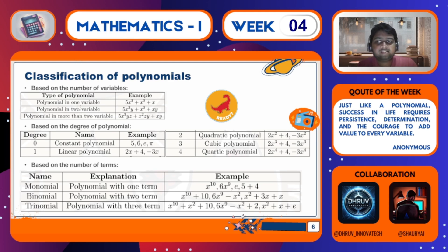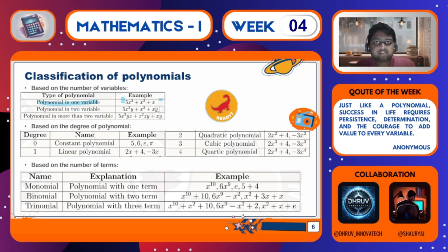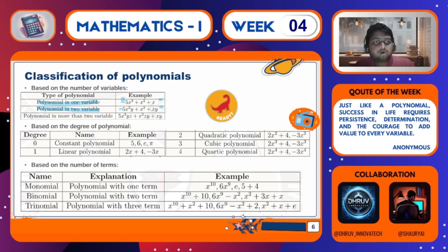First let's see the classification based on the number of variables — that is, polynomial in one variable. This is the most common one and we have also studied this in school. One example is 5x³ + x² + x. Then comes the polynomial in two variables, where two variables can be spotted. You can observe that here the degree would be 4, because apart from constants all the variable powers are to be added — the powers of the variables, not the variables themselves.